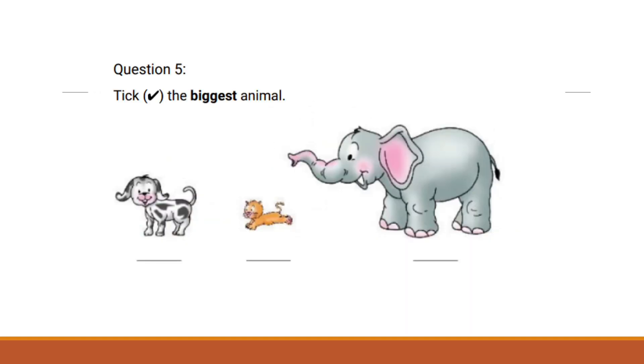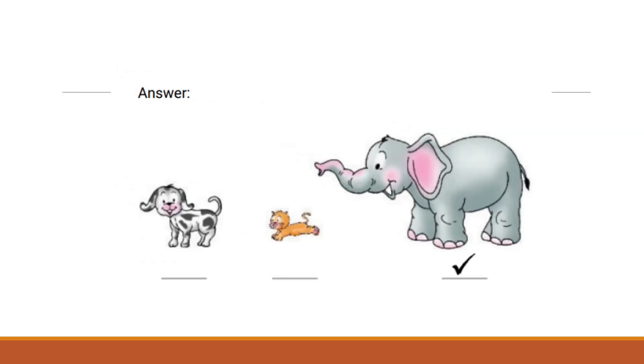Tick the biggest animal. The biggest animal out of a puppy, elephant, and cat is the elephant. Please tick the elephant to indicate that it is the largest among these animals.